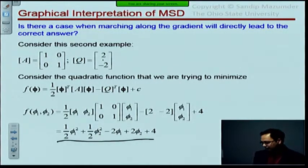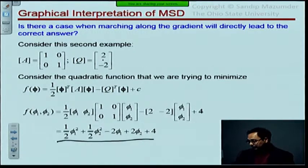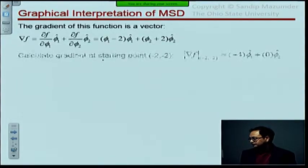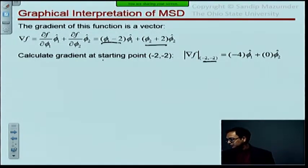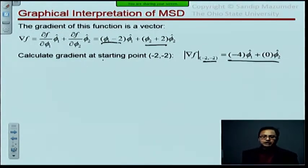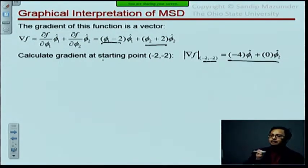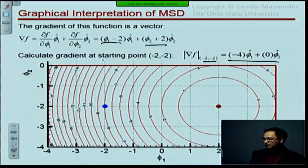If you plot it, by the way this is what the gradient vector looks like: phi_1 minus 2 and phi_2 plus 2. You plug in minus 2, minus 2, this is what you get as your gradient vector. It's basically along the x direction, or the phi_1 direction in this case. If you plot it, this is what the function looks like. The function that I had on the previous page which I said is the equation of a circle. These are what the contours look like.